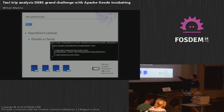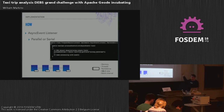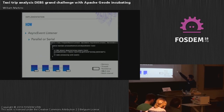The idea of the async event listener: it can be parallel and serial. Every node in the cluster will have a small queue, and this queue is also distributed. You can set specific settings for the queue, like batch size or batch interval. Inside that listener, the programming model is very simple.